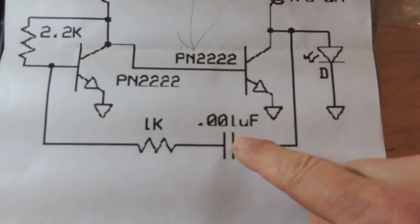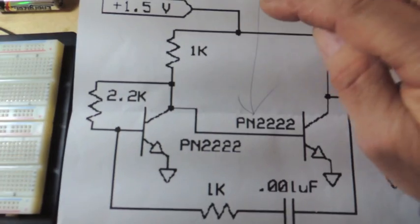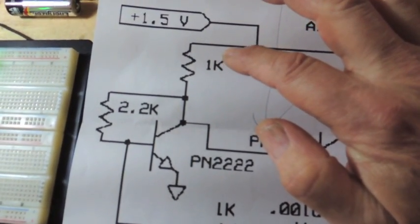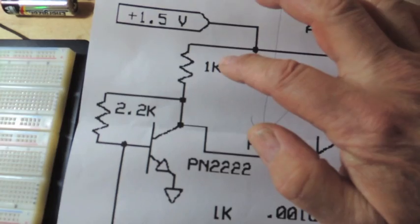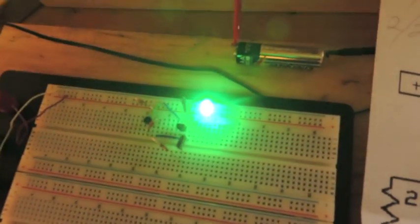Then I had to order this too, this is a 1 nano farad capacitor, and then there's just some resistors here. Now when I got done, this 1k resistor, with the 1k resistor it was a very dim light and it only was drawing like 7 milliamps.